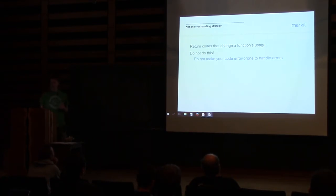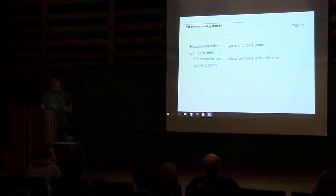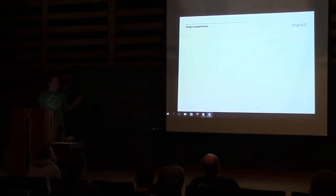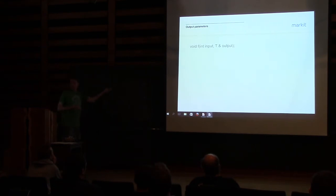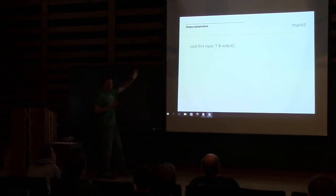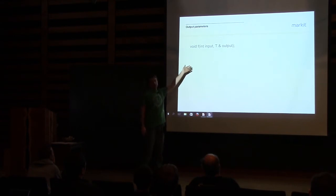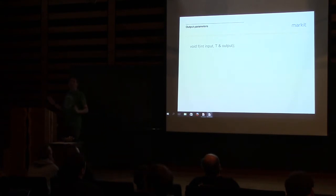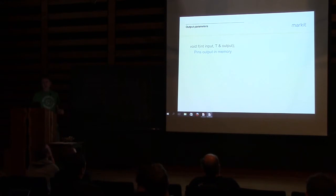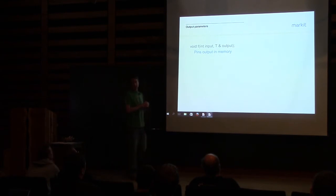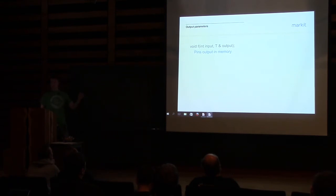Output parameters: you pass a reference to output and populate it with data. This is a really common pattern. But what it does is pin that output in memory — you're passing a reference, which means it has to live in memory, not a register, and memory is slow. It can also tie the optimizer down due to aliasing: when you pass a reference to T, if there's a T anywhere else in your program, the optimizer has to assume they might be the same thing.